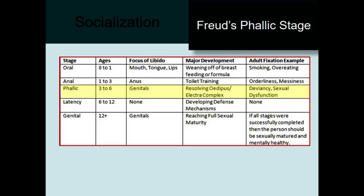We'll cover Freud's theory in more detail in another chapter, but I want to look at the phallic stage. Freud thinks sexual orientation gets determined between about ages three and six. As you resolve the challenges of this stage, you either identify with your same-sex parent - which leads to heterosexuality - or you identify with your opposite-sex parent, which leads to a gay outcome. It's about who you see yourself as wanting to be like and who you imitate.